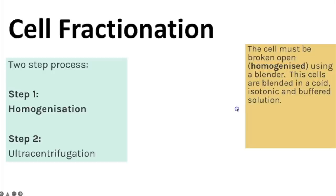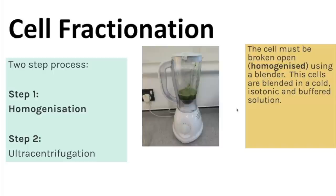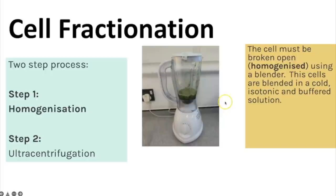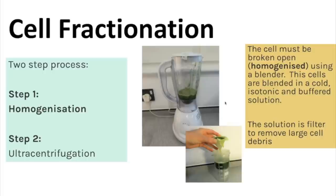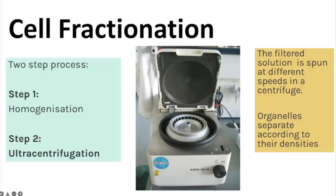Cell fractionation is a two-step process: homogenization and ultracentrifugation. Homogenization involves breaking open the cells, which can be done in a blender, as long as the solution is cold, isotonic and buffered. The sample is then filtered to remove large debris, and the filtrate is used for ultracentrifugation to isolate the different organelles.